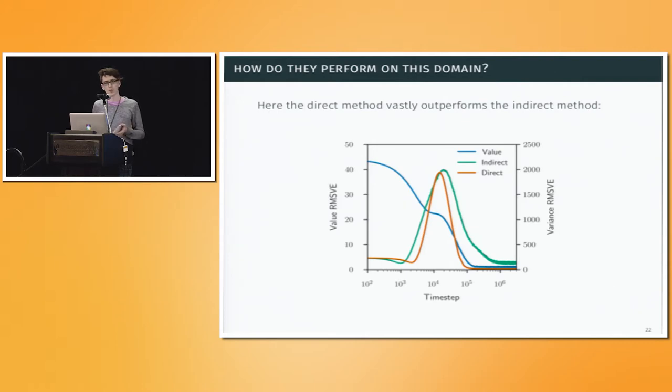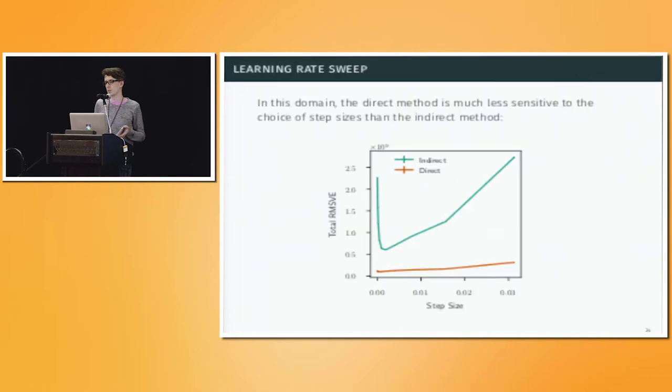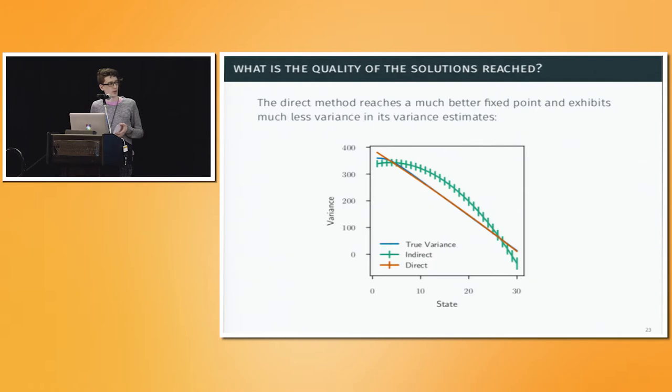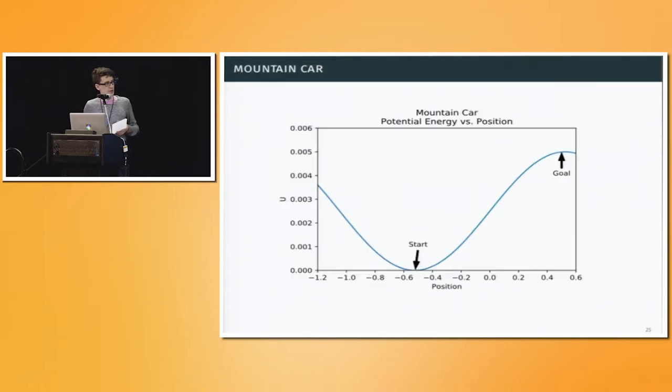But perhaps it's an artifact of hyperparameters. If we change the settings, maybe we could get something better. That turns out to not necessarily be the case. If you look at the step sizes that we swept over, in all cases, DVTD is more robust. It still manages to learn quickly, effectively, to a lower error. And even with the best choice of step size that we could find for VTD, it exhibited worse performance than the direct method. If you look at what they actually converge to in terms of the estimates of the variance for the states, you notice that VTD actually seems to track a worse target, whereas the direct method cleaves almost entirely to what the true variance is in this domain.